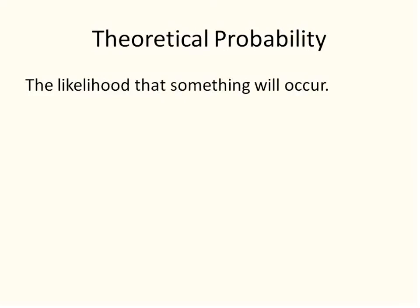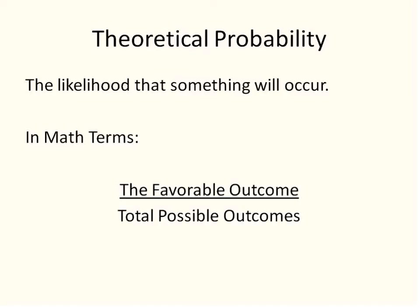Theoretical probability is the likelihood that something will occur. Mathematically speaking, it tells us what are the chances of something happening — just in theory; it may not be true. Most probability won't necessarily be true, but it's a mathematical equation. The formula is: favorable outcomes over total possible outcomes.